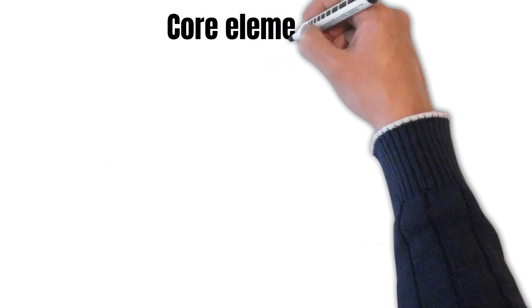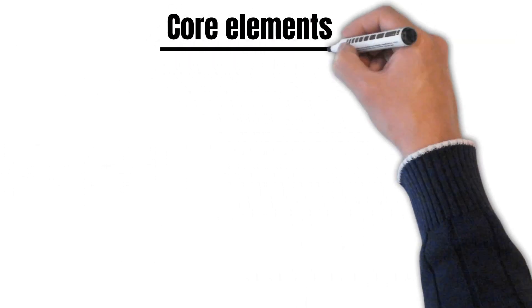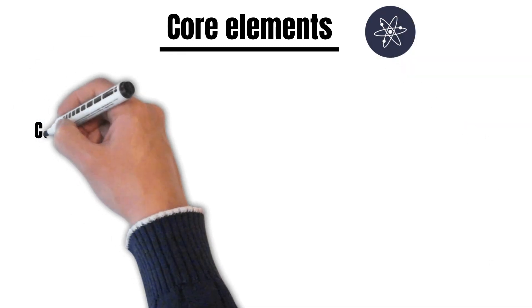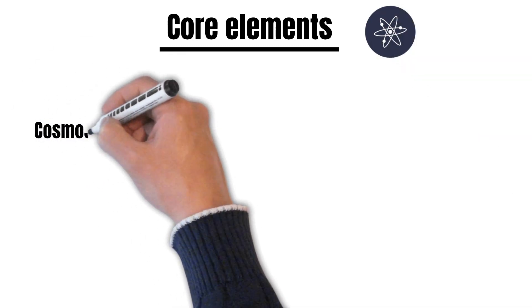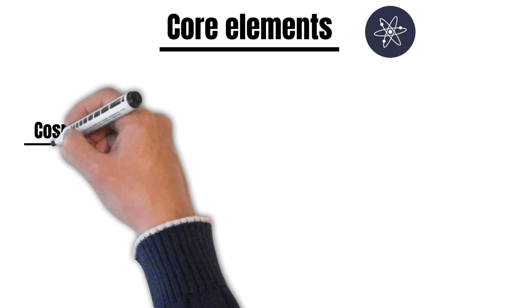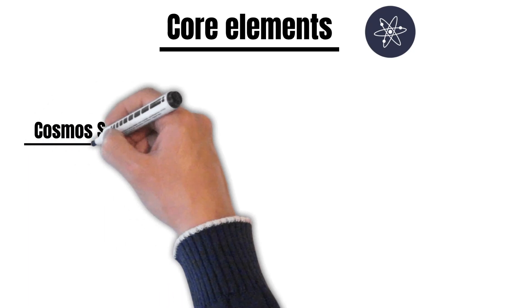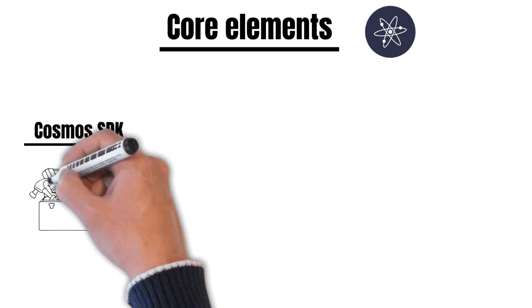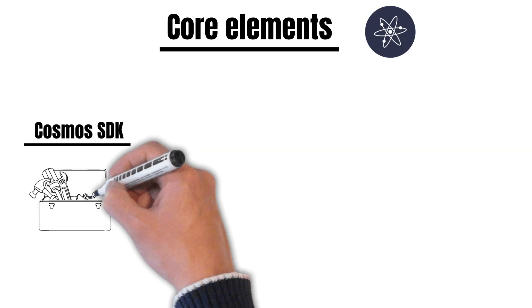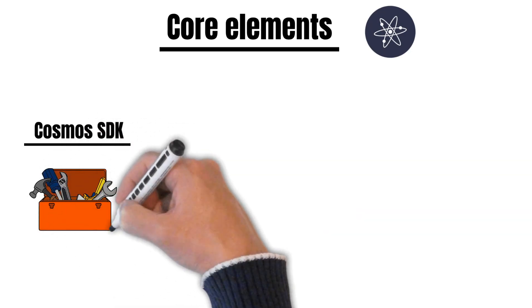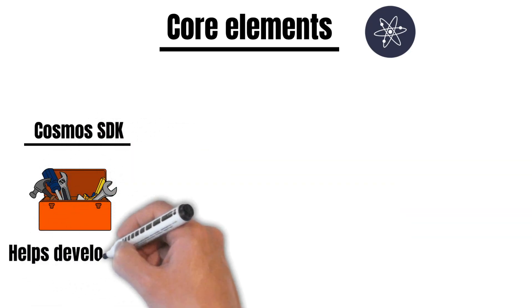There are two core parts of Cosmos. First, the Cosmos SDK. The Cosmos SDK is a standardized way to create a new blockchain from scratch. You can imagine it like a developer toolkit to easily build a new blockchain. Most projects use the Cosmos SDK to build an application-specific blockchain, where the use case of each blockchain is different.